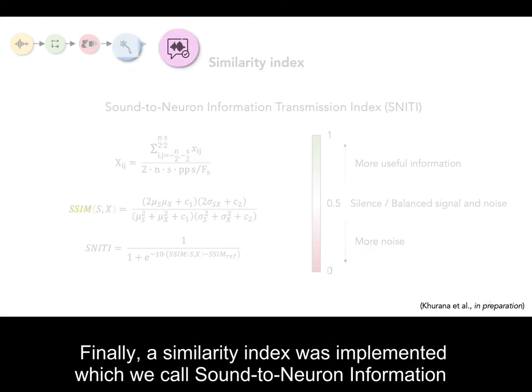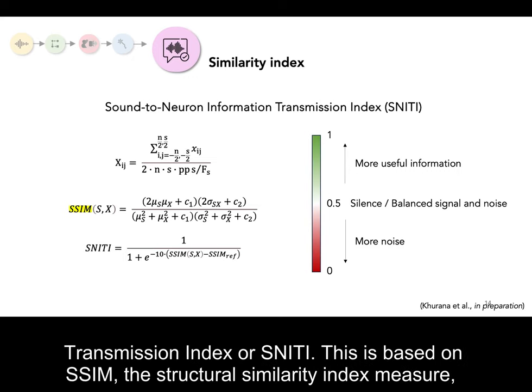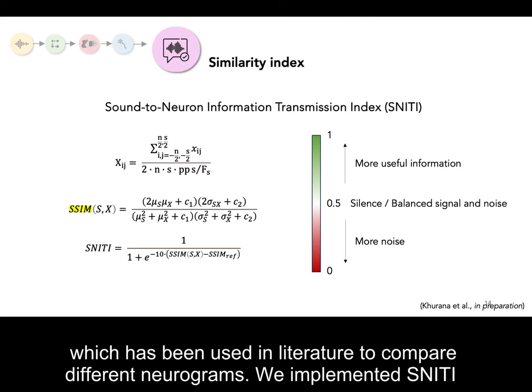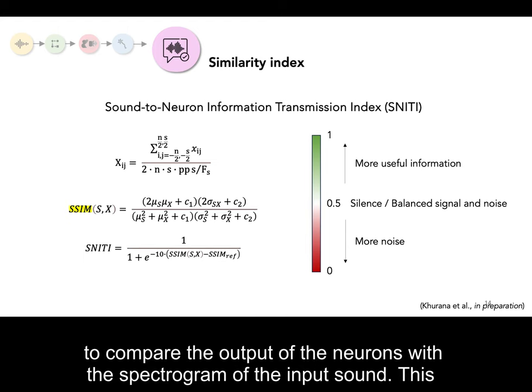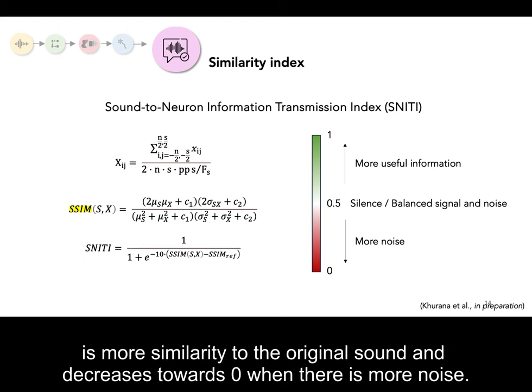Finally, a similarity index was implemented, which we call the Sound to Neuron Information Transmission Index, or SNITI. This is based on S-SIM, the structural similarity index measure, which has been used in literature to compare different neurograms. We implemented SNITI to compare the output of the neurons with the spectrogram of the input sound. This score is 0.5 when there are no spikes from the neurons, increases towards 1 when there is more similarity to the original sound, and decreases towards 0 when there is more noise.